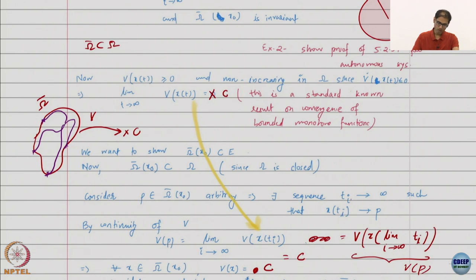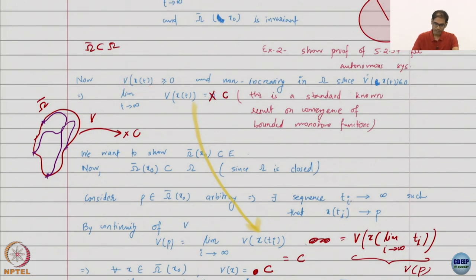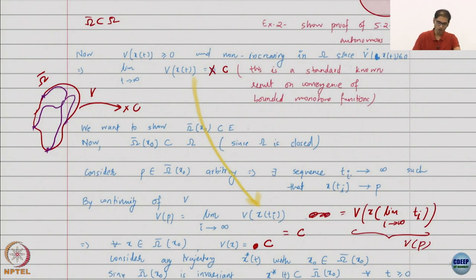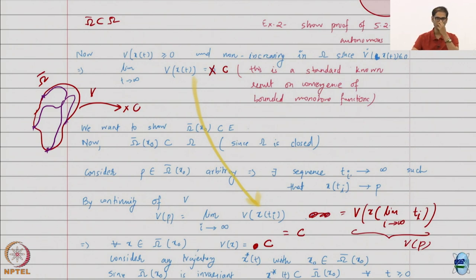In our case, V is lower bounded — we took it to be positive definite — and it is non-increasing because V dot is less than or equal to zero. As a function of time, V can be flat or decreasing but cannot increase. Therefore, V has a limit as t goes to infinity, which is some constant C. V can be seen as a function of time by plugging in the solutions, and that is also the notion behind taking the derivative — V of x(t) depends on the trajectory.